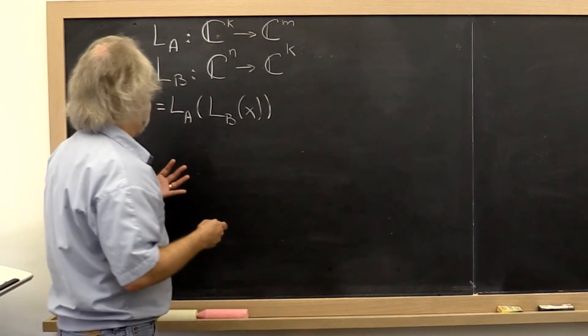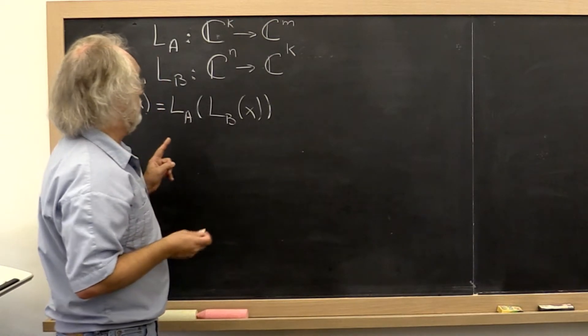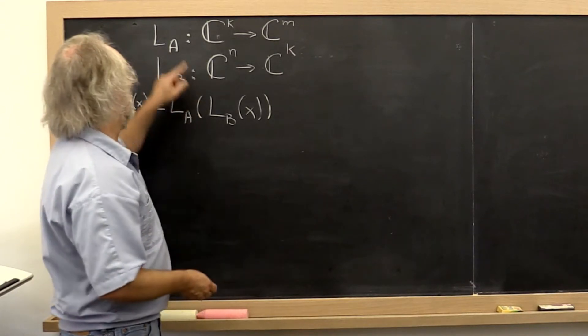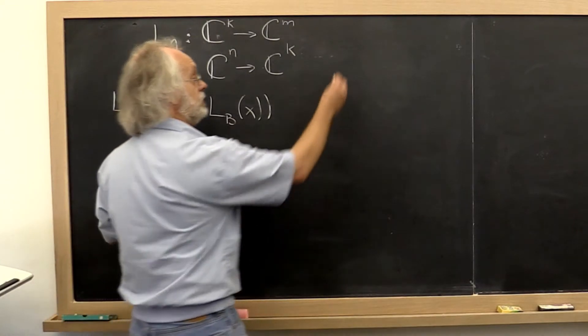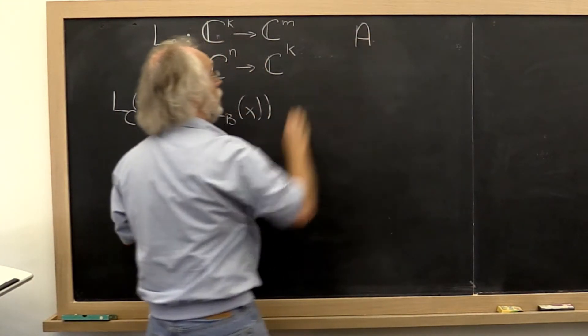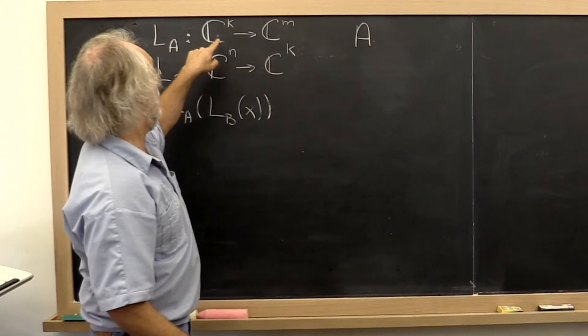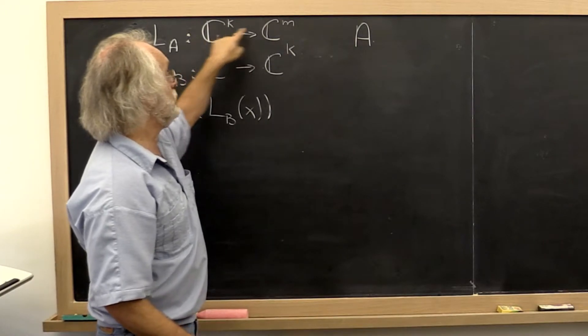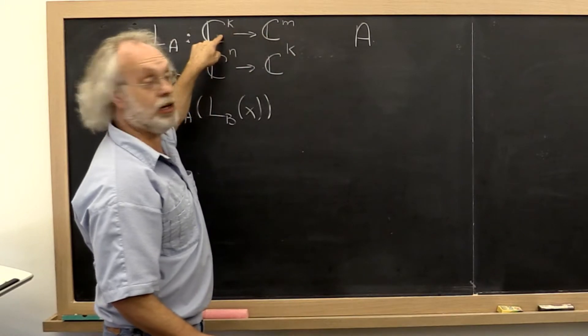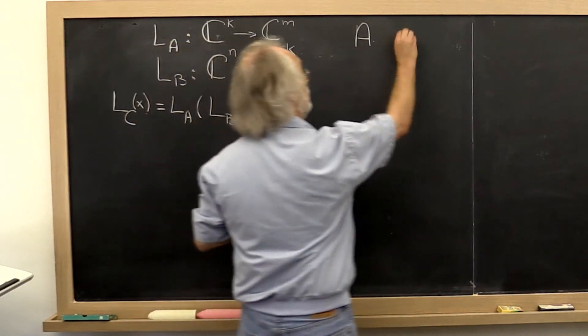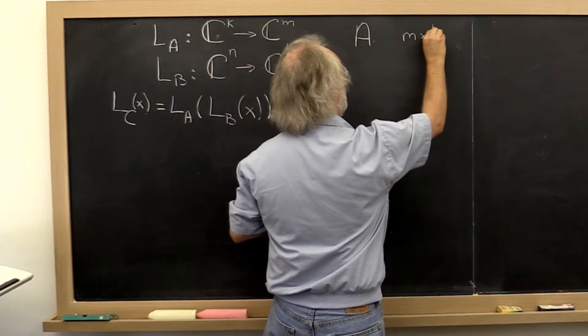So what does that mean? We just learned that this linear transformation can be represented by a matrix. Let's call it A. And notice that that matrix would have k rows and m columns. Sorry, m rows and k columns.